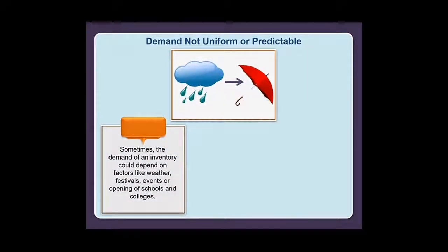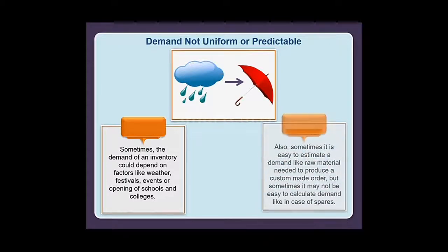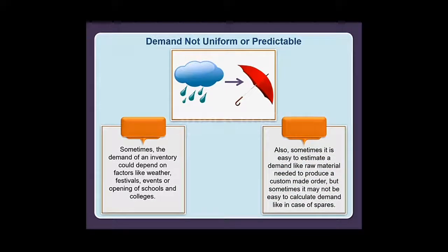Demand not uniform or predictable: Sometimes the demand of an inventory could depend on factors like weather, festivals, events, or the opening of schools and colleges. Sometimes it is easy to estimate demand, like the raw material needed to produce a custom-made order, but sometimes it may not be easy to calculate demand, such as in the case of spare parts.